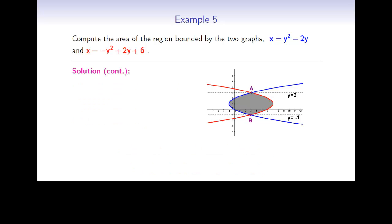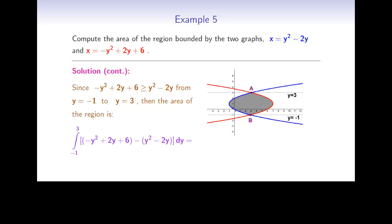Since the x-values on the red parabola are greater than the x-values on the blue parabola for y between negative 1 and 3, we subtract the blue parabola from the red parabola and integrate. The area is given by the integral from negative 1 to 3 of (negative y squared plus 2y plus 6) minus (y squared minus 2y) dy. We simplify and integrate to get negative 2y cubed over 3 plus 2y squared plus 6y, evaluated from negative 1 to 3. Substituting the bounds gives 64/3, which is the area of the shaded region.